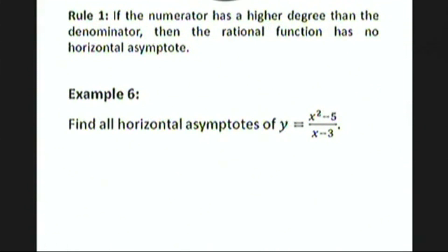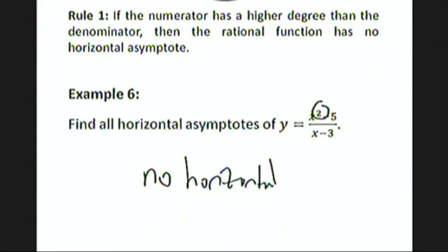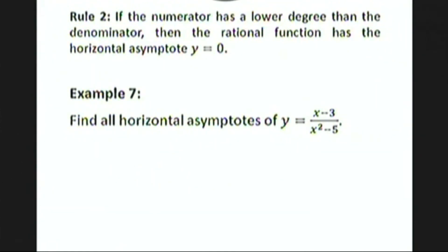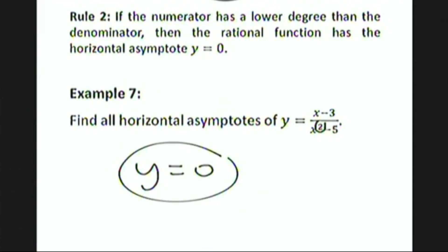For Rule 1: find all horizontal asymptotes of y equals x squared minus 5 over x minus 3. The numerator has degree 2 and the denominator has degree 1, so the numerator has a higher degree. Therefore this rational function has no horizontal asymptote. For Rule 2: find the horizontal asymptotes of y equals x minus 3 over x squared minus 5. The numerator has degree 1 and the denominator has degree 2, so y equals 0 is a horizontal asymptote.